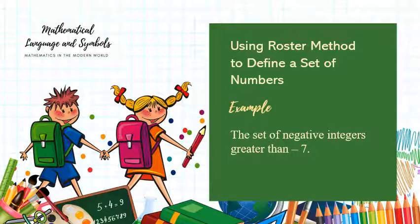The set of negative integers greater than negative seven. So negative integers greater than negative seven. Remember, in the negative numbers, the lesser the value of the number without the negative sign, the greater it is in the negative integers.